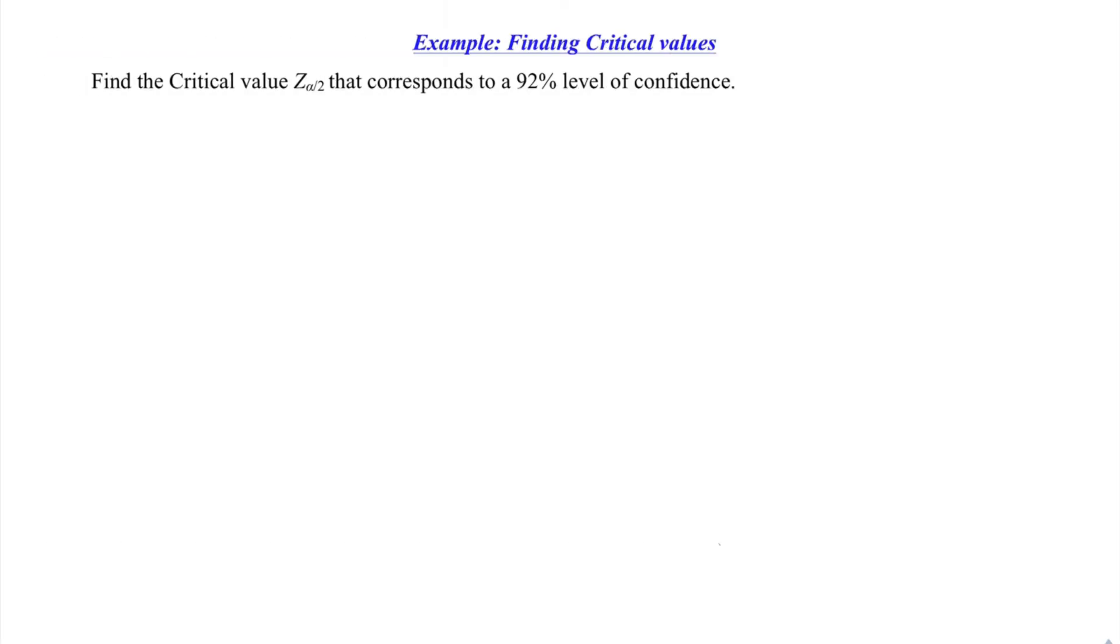So heading into our first example, it's a little precursor before we go on to our construction of our confidence intervals. We're asked to find the critical value Z-sub-alpha over 2 that corresponds to a 92% level of confidence. The big thing to be careful of here is that it's Z-sub-alpha over 2, not just Z-sub-alpha. It also corresponds to a 92% level of confidence, so we need to be thinking about this Z-sub-alpha over 2 as it applies to confidence levels and confidence intervals.